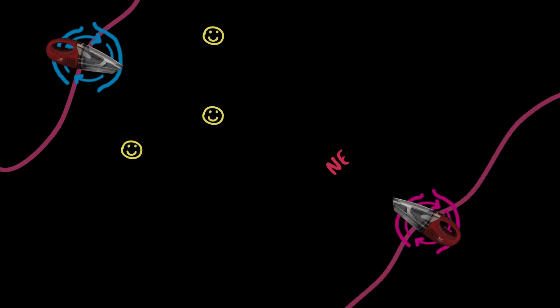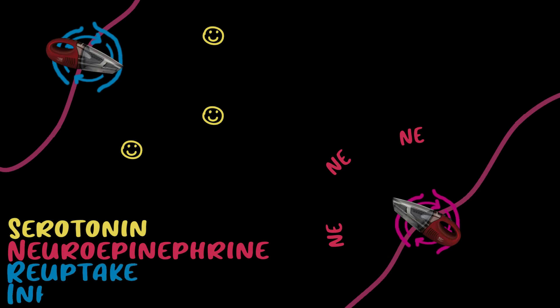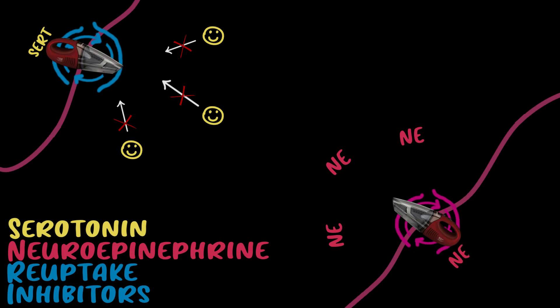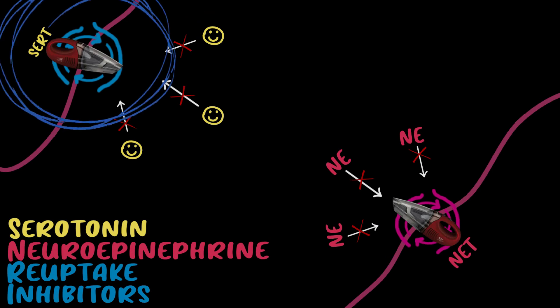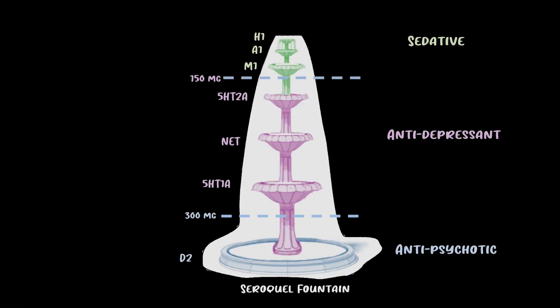I'll review the concept of sequential binding quickly. SNRIs stand for serotonin and norepinephrine reuptake inhibitors — they block SERT, which is responsible for serotonin reuptake, and NET, which is responsible for norepinephrine reuptake. A drug with affinity for multiple receptors doesn't bind to all of them simultaneously; it initially binds to the receptor it has the greatest affinity for and then eventually moves on to the next receptor.